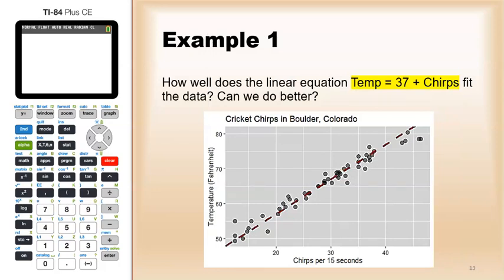Or 37 plus 1 times the number of chirps if you want to be a little more specific, and that gives us our equation. Now the next question is can we do better?